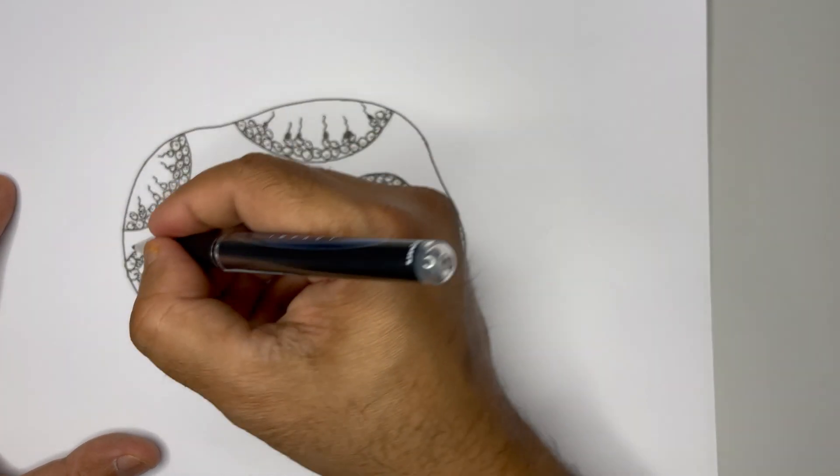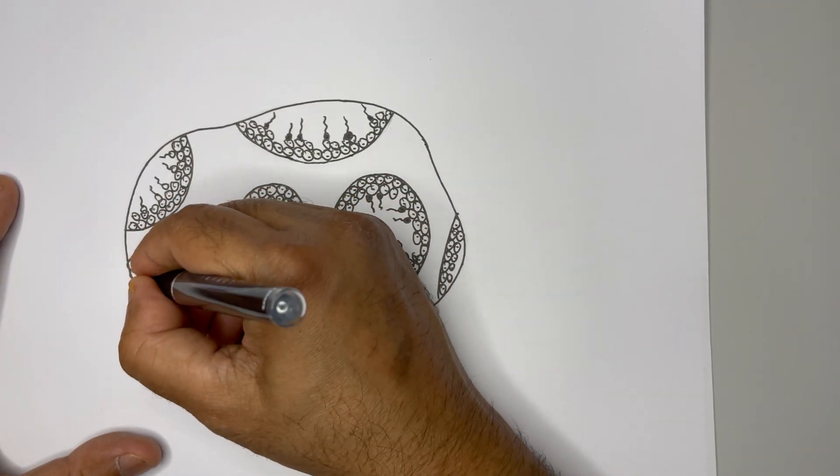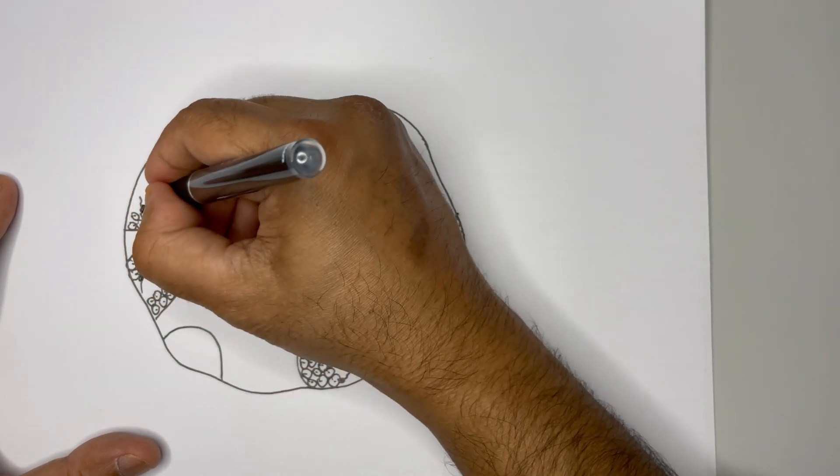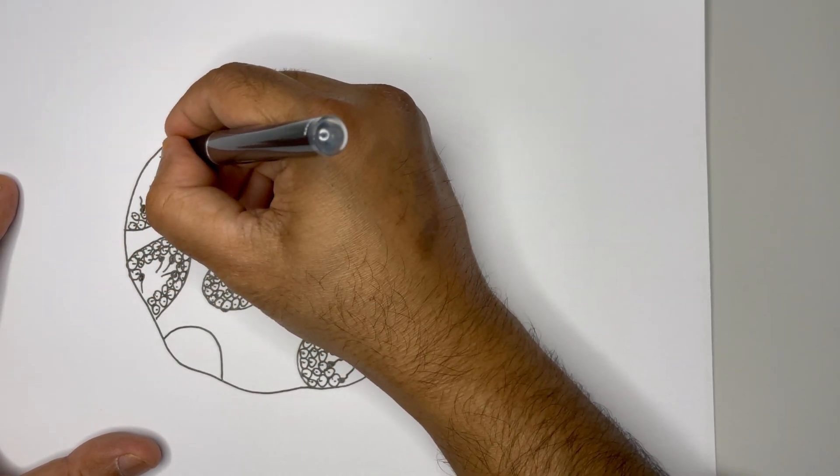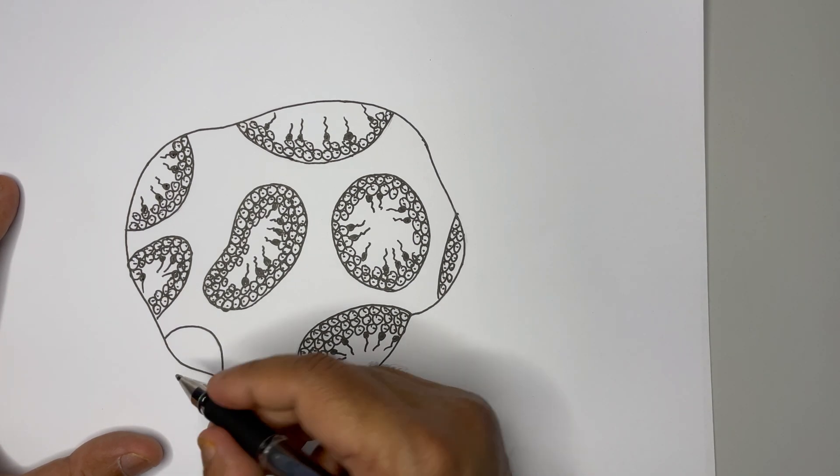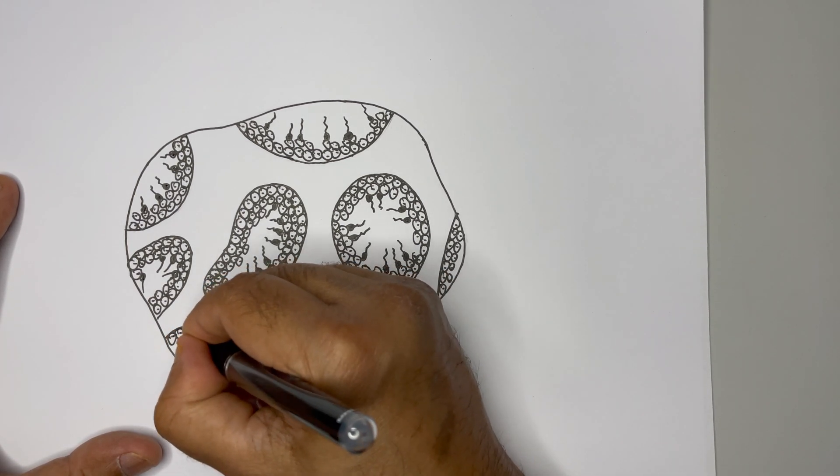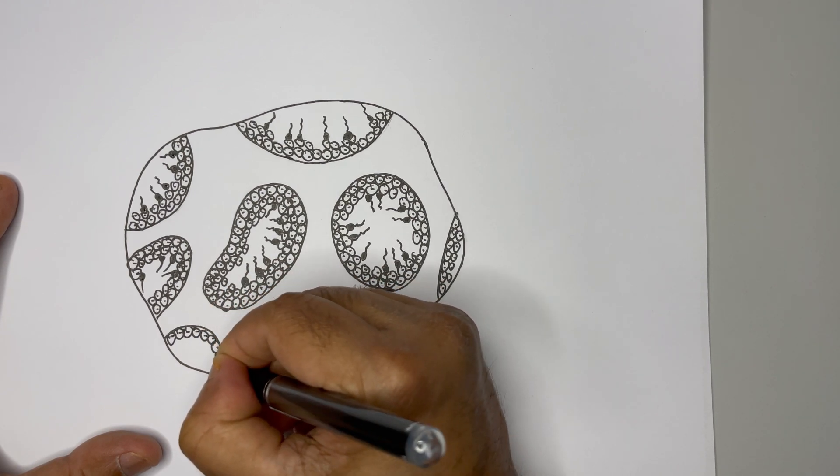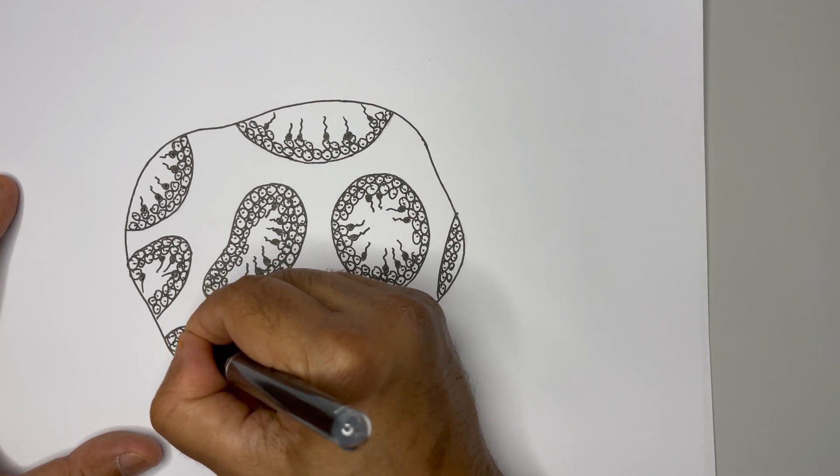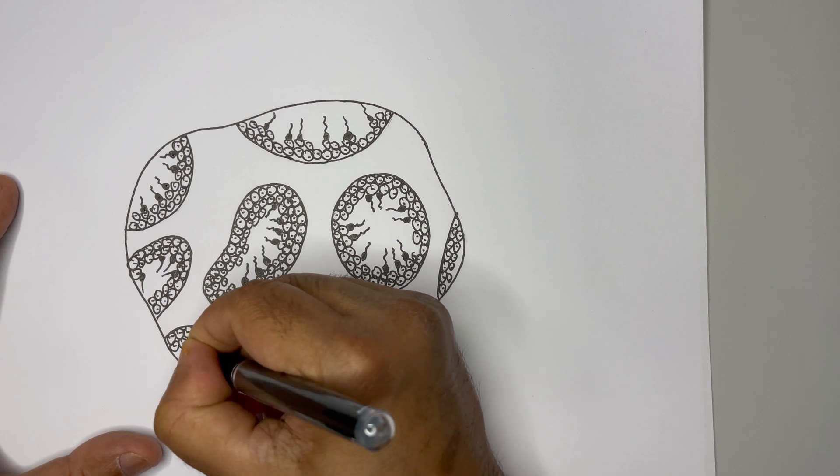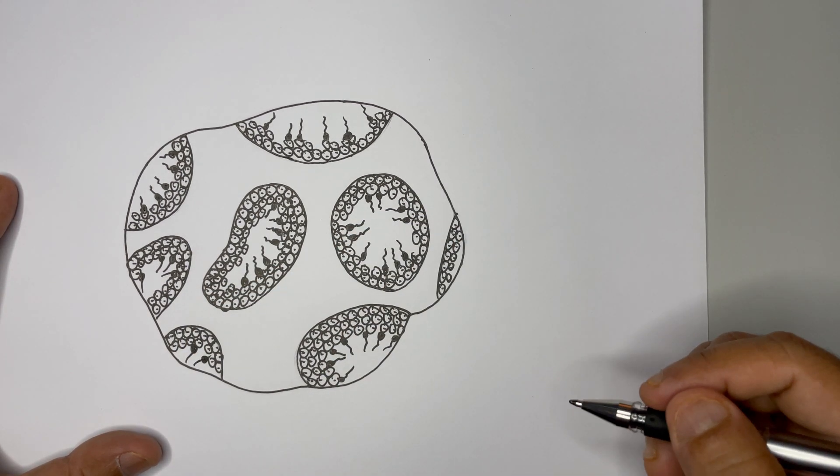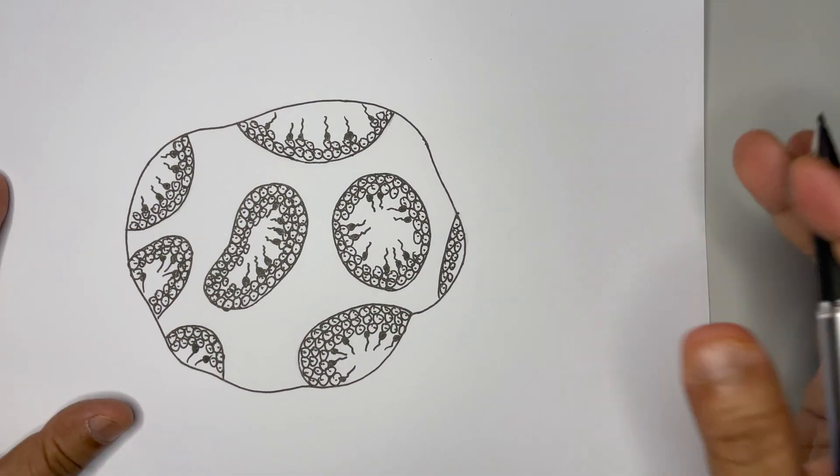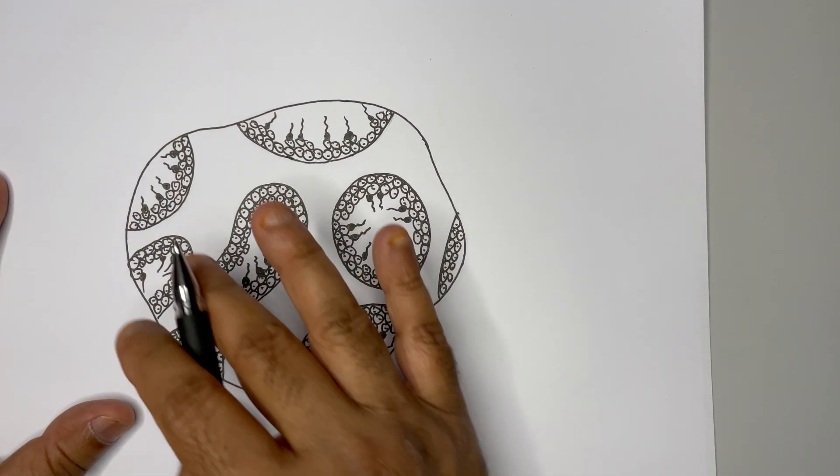Now see that contrast you might be getting it. Here also some sperms are defined. Now we have one more here, so let's continue doing the same procedure, just drawing circles and putting dot inside it.